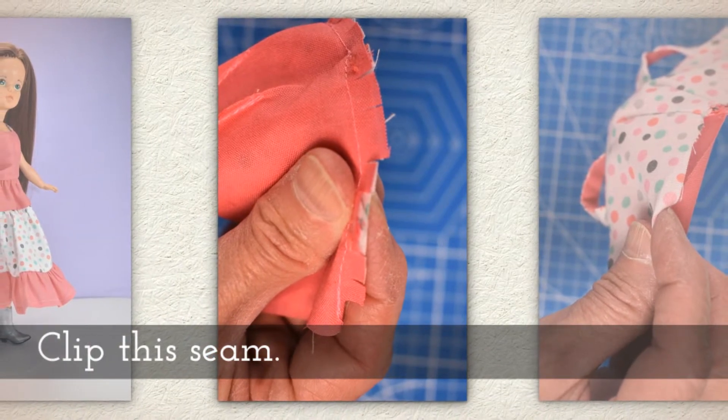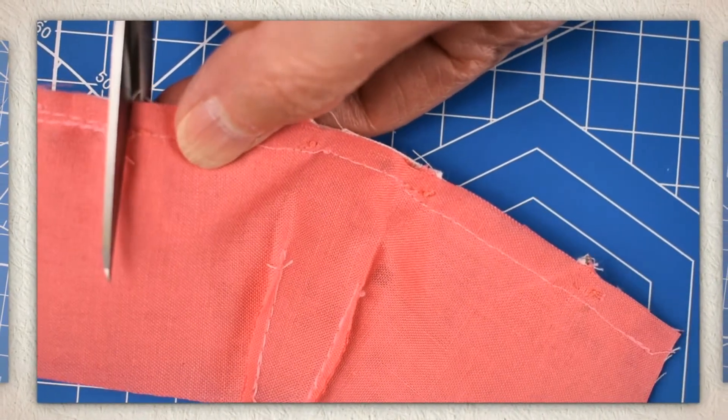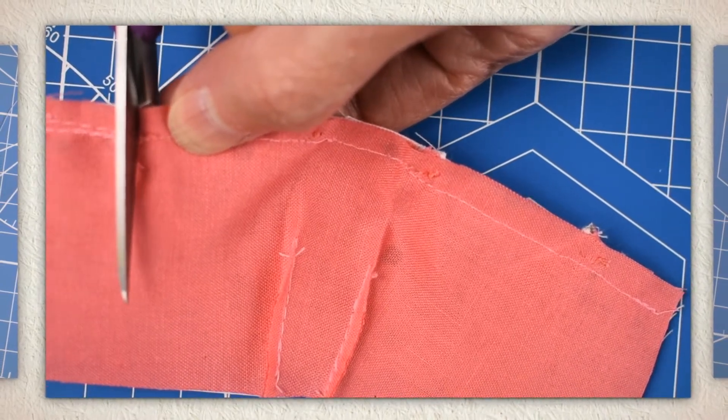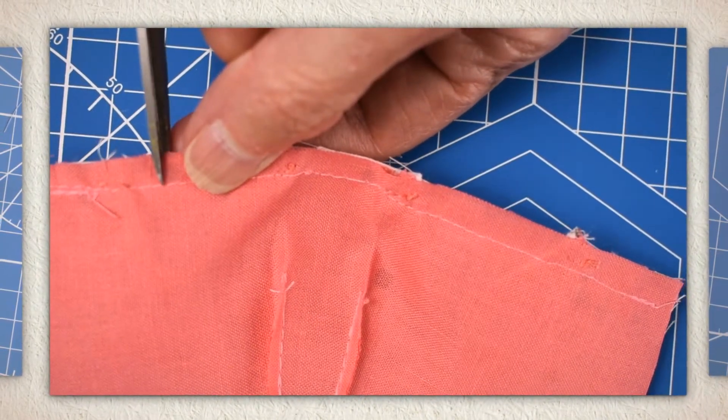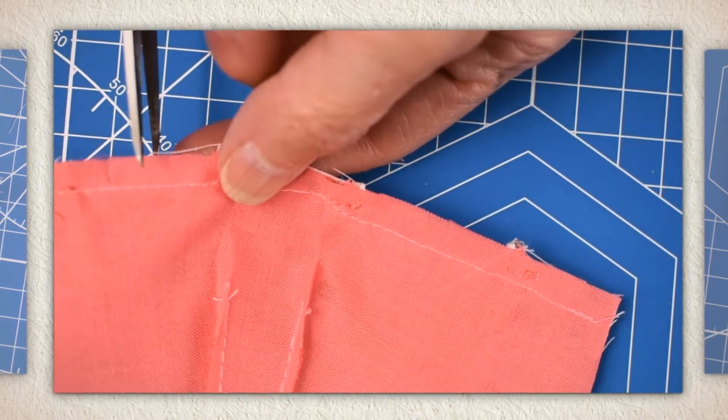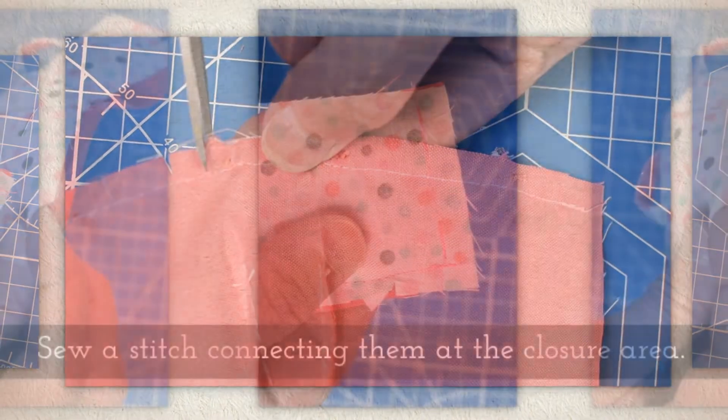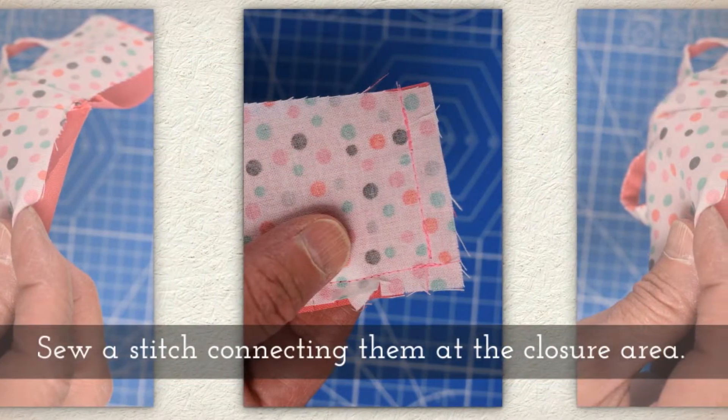Clip this seam. Now when you clip seams it's important to not go over the top of the sewing you've just done so be very slow and careful. Normally I speed this section up but I want you to see how very slowly I do this. You'll want to clip seams all the way across.